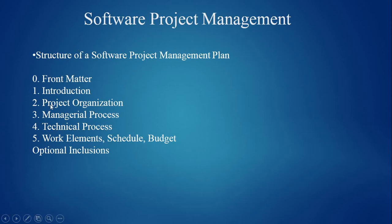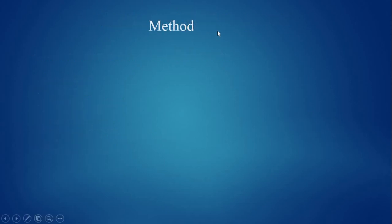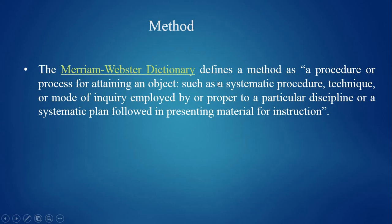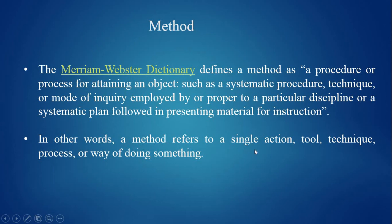Next is the concept of method. The Merriam-Webster dictionary defines a method as a procedure or process for attaining an object — such as a systematic procedure, technique, or mode of inquiry employed by a particular discipline, or a systematic plan followed in presenting material for instruction. In other words, a method refers to a single action, tool, technique, process, or way of doing something.